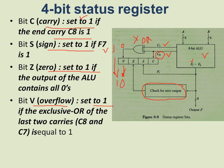The overflow bit is determined by XOR-ing the last two carries. If the two bits are the same, the output is 0; if they are opposite, output is 1. If both carries are 1, then 1 XOR 1 is 0, so overflow V will be 1. If bit V is set to 1, the last two carries gave opposite results.